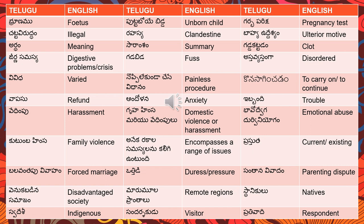'Disadvantaged society' — venukko badina samajam; samajam is society, venukko badina means disadvantaged. 'Remote regions' — maramola prantaalu. 'Natives' — sanakoli. 'Indigenous' — swadeshi; indigenous people of Australia — swadeshi. 'Sandarshaku' means visitor.